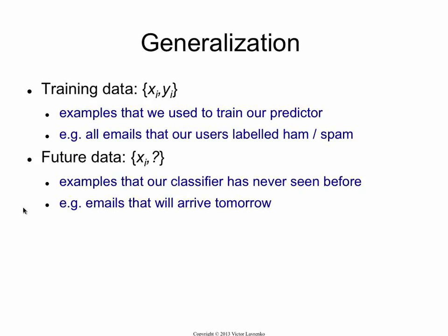That's our training data. What we really want is, once we build the classifier, we're going to use it for classifying data that it's never seen before — future data. That data will come in with the X_i, but we won't know the right label for it.